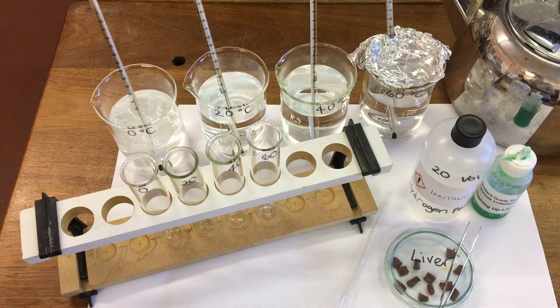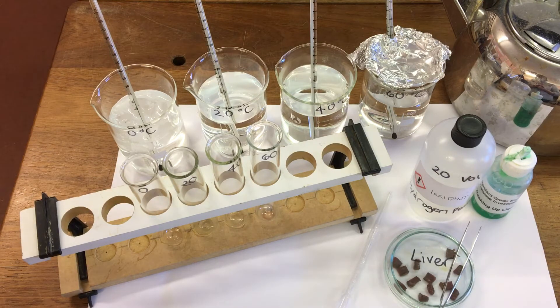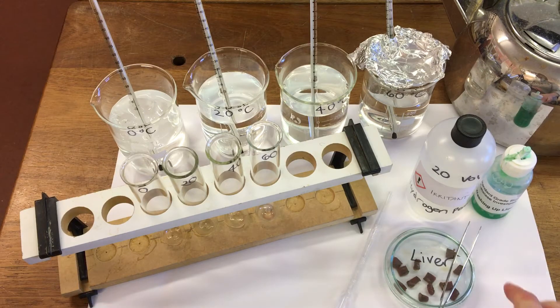In this experiment we're going to look at how temperature affects enzymes. We're going to look at the reaction of hydrogen peroxide and we're going to use the enzyme catalase which is contained in liver.